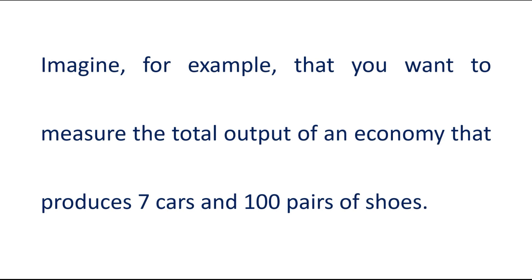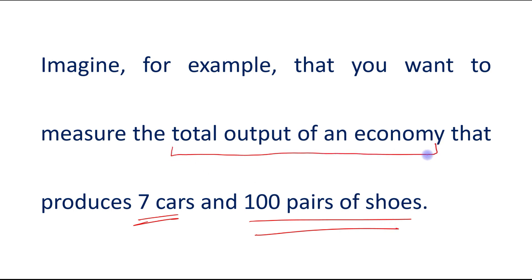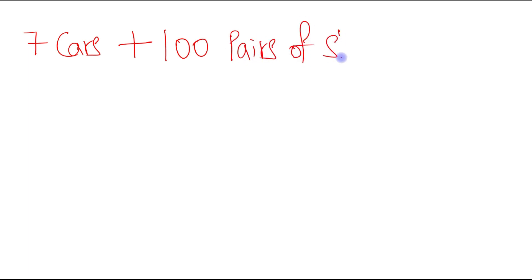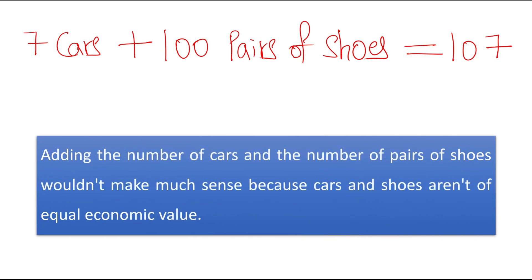Imagine, for example, that you want to measure the total output of an economy that produces 7 cars and 100 pairs of shoes. If we simply add 7 cars plus 100 pairs of shoes, we get 107. But this approach is simply wrong.